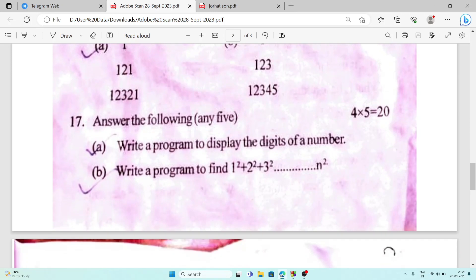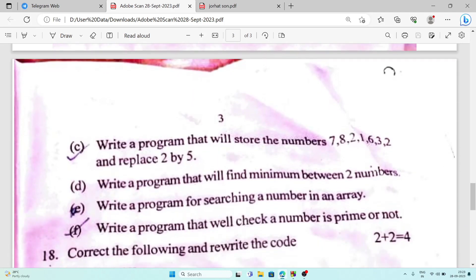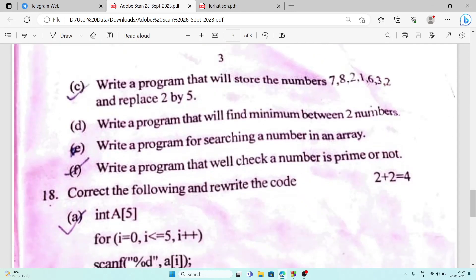These programs are already included in the book. You can easily do it from there. This one is already from the exercise. Here they changed this part of the question to 2 by 5. In the book I think it was 3, here they changed it to 5.